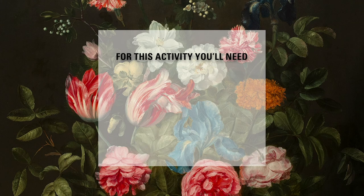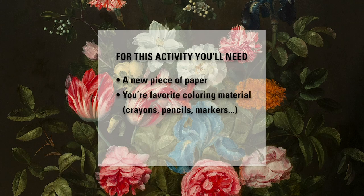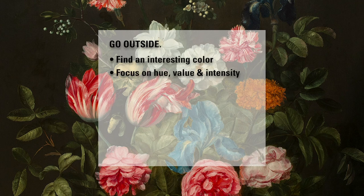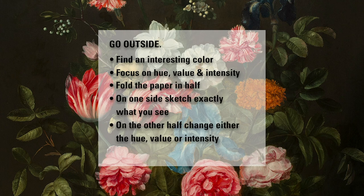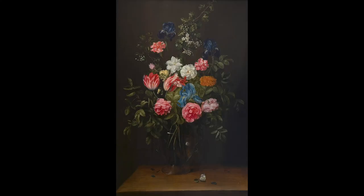For our art activity, let's grab a new paper and any type of coloring material you have such as crayons, colored pencils, or markers. Go outside and find something that has an interesting color and focus on its hue, value, and intensity. Fold your paper in half and on one side sketch exactly what you see. On the other half, change either the hue, value, or intensity of your first drawing, just like we previously did with the flowers.